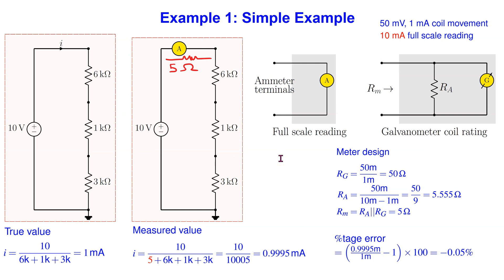To delve deeper into this issue of disturbance caused by an ammeter, let us consider the same example but with all resistance values changed to kilo ohm instead of ohm. We can solve this problem as before. In this case, we can see that the same ammeter results in a percentage error of only minus 0.05%. In other words, the measured value is much more accurate. This is because the effective meter resistance of 5 ohm is now much much smaller compared to the kilo ohm resistances in series with it. Thus the meter disturbs the circuit less.